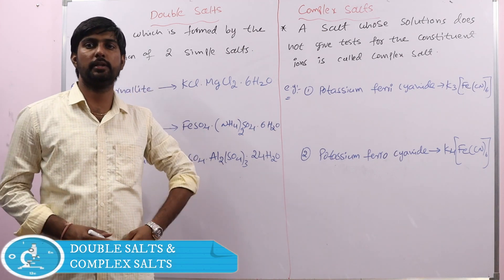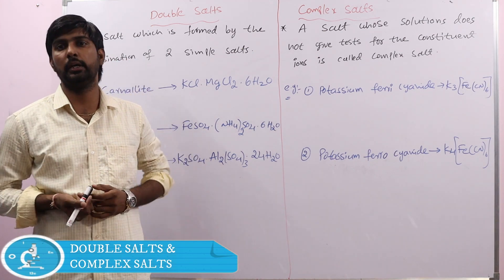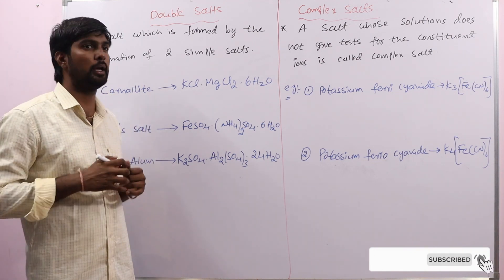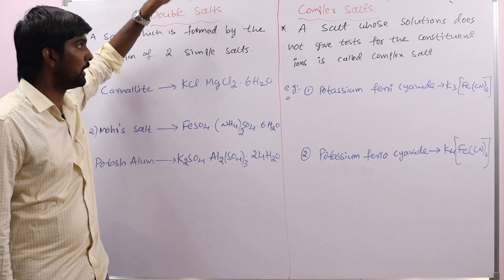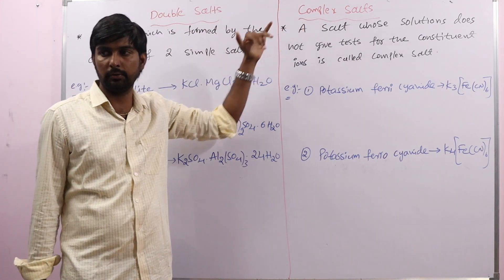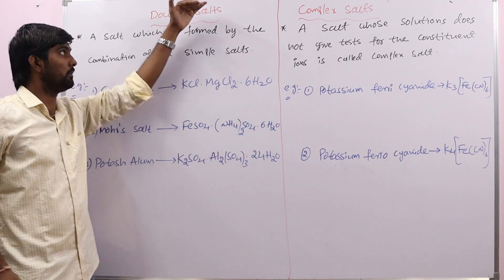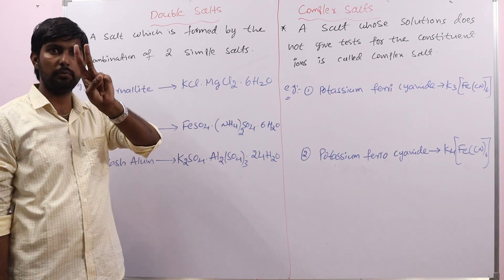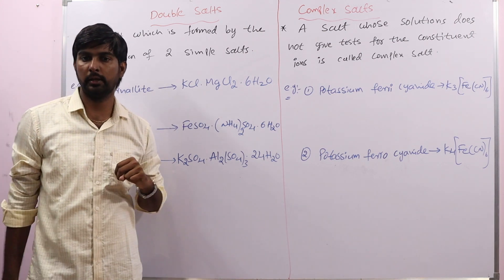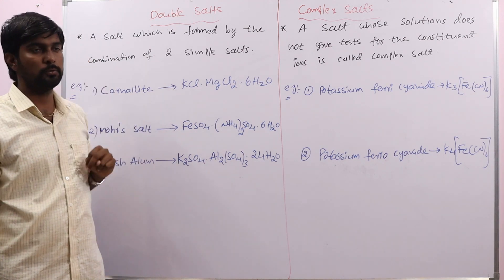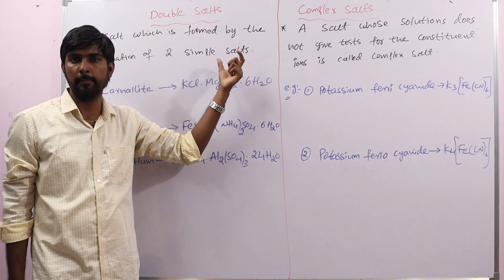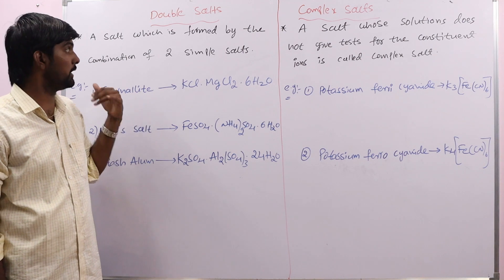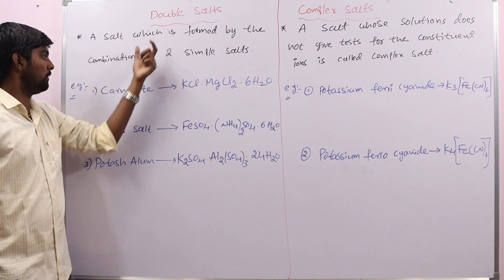Hello viewers. In the previous class we discussed the mixed salts, and before that we discussed simple salts, acidic salts, and basic salts. Here the last types of salts — double salts and complex salts — are going to be discussed in this lecture. So let us start with double salts. A salt which is formed by the combination of two simple salts is called a double salt.